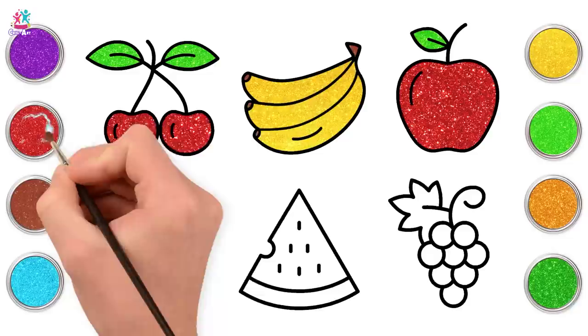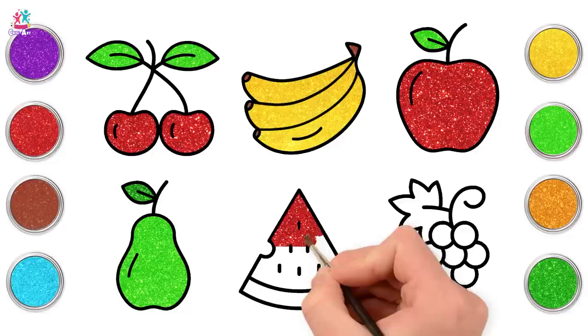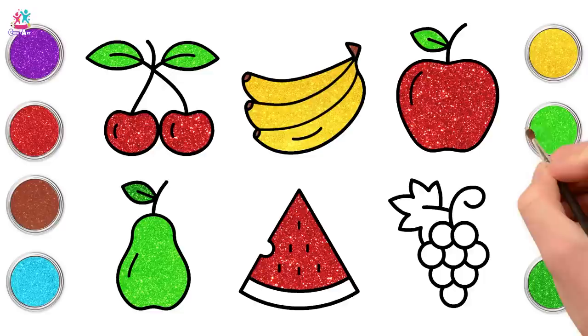Red next for the main part of our watermelon. Delicious. I'd love eating these on a hot summer's day. And green for the rim.